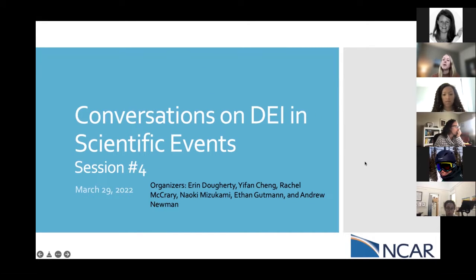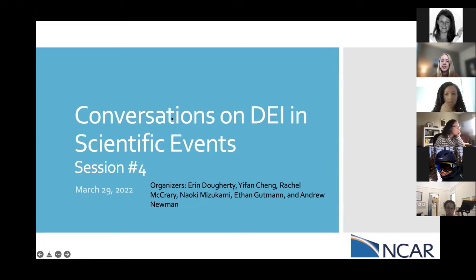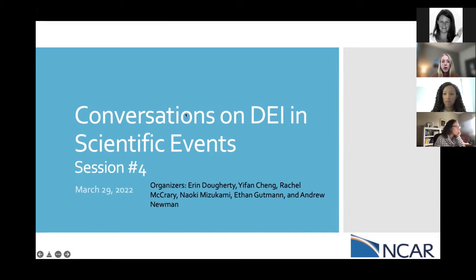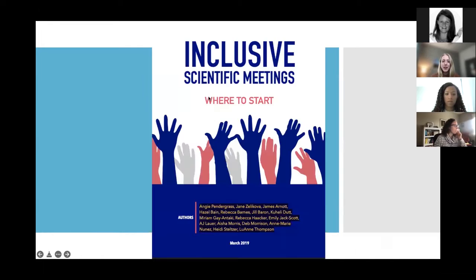We'll go ahead and get started, and then if people trickle in, we'll trickle in. Thanks for joining everyone. Today is our fourth session on conversations on DEI and scientific events. My name is Erin Dougherty. I'm a postdoc at NCAR, and I'm part of a team at NCAR who organized this series. We based this series on the Inclusive Scientific Meetings Guide that came out in 2019, which talked about different principles for creating more inclusive scientific events.